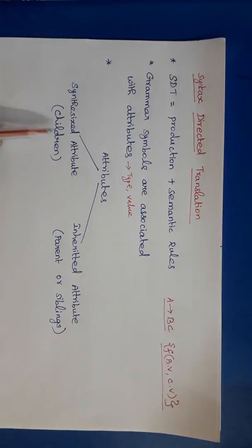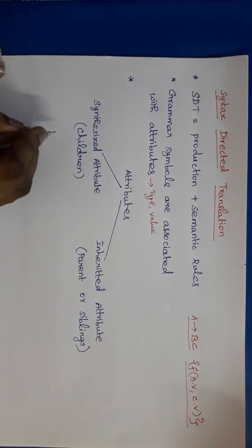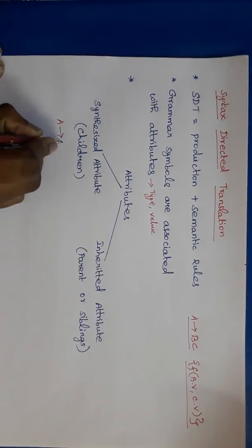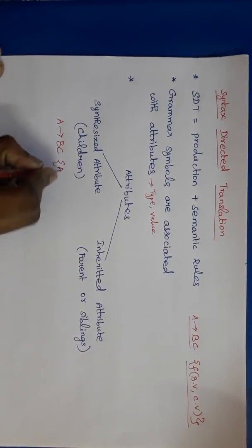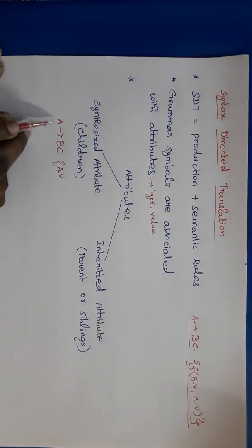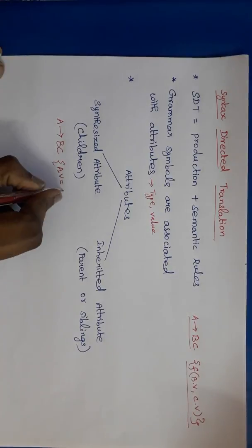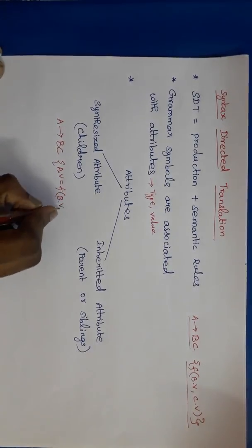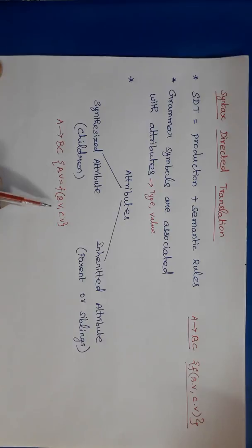Synthesized attributes means the value can be evaluated from the children. Inherited attributes means the values can be evaluated from the parent or siblings. For example, in synthesized attribute, if A tends to BC is a production, then A.V, the attribute for A, can be evaluated from B and C — it may be a function of B.V and C.V.